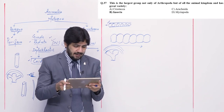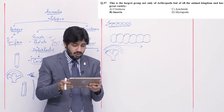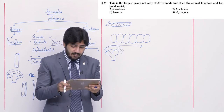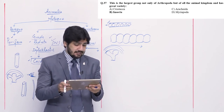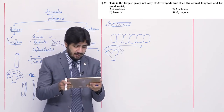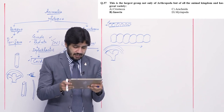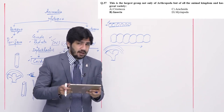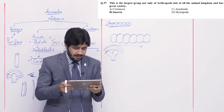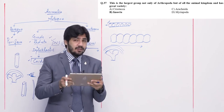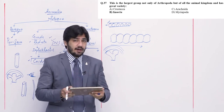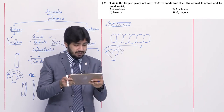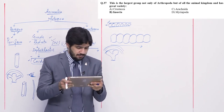Question number 37: this is the largest group not only of Arthropoda but of all animal kingdom, and has great variety — alpha Crustacea, beta Insecta, charlie Arachnida, or delta Myriapoda. The largest class within arthropods and among all animals is class Insecta. Right option is beta.